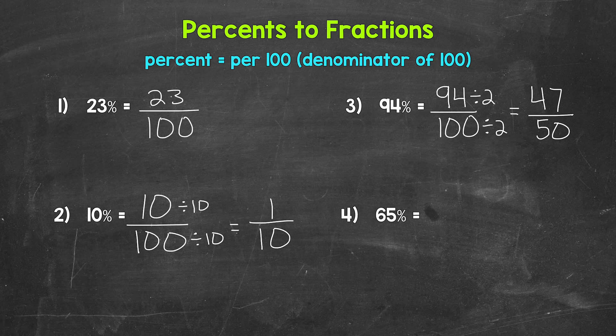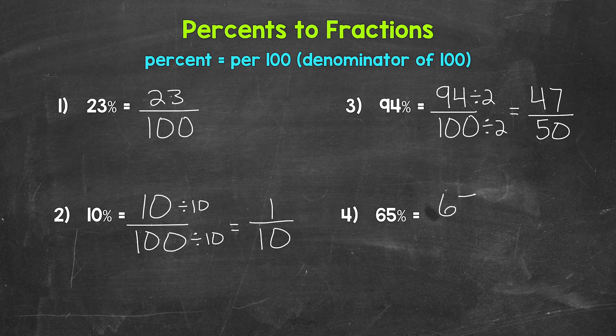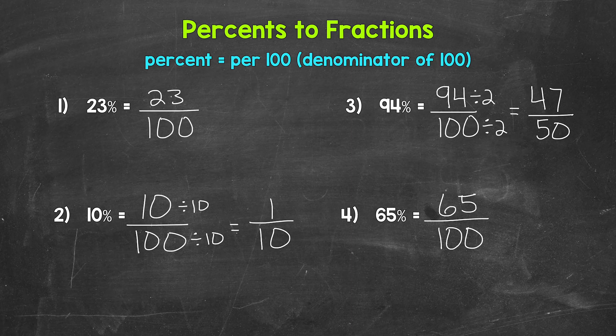Lastly, let's move on to number four, where we have 65%. So we write this as a fraction as 65 over 100, 65 hundredths. And that is correct, but we can simplify again here.